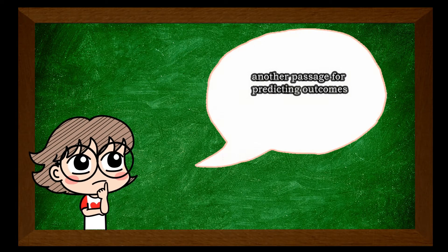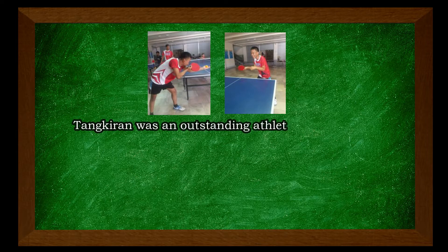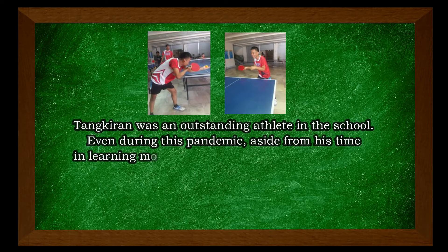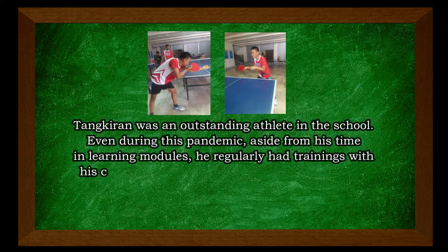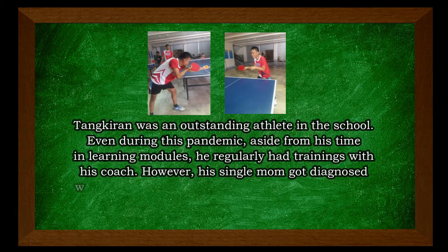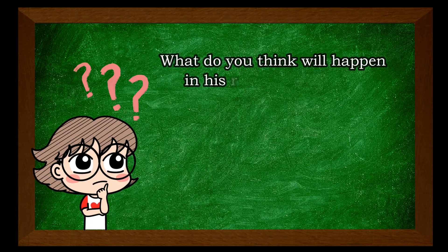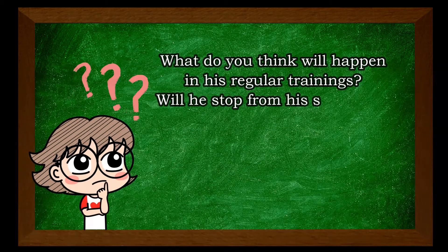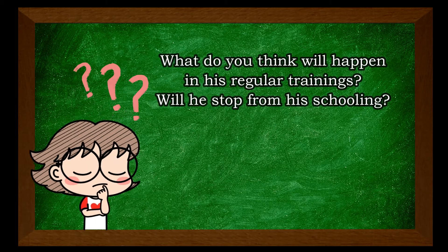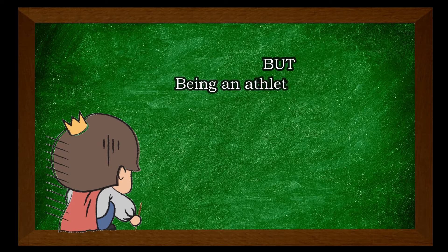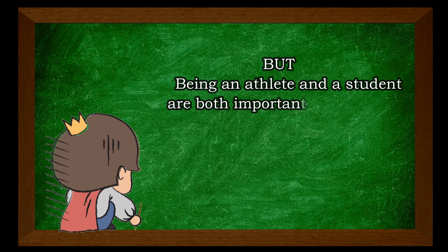Let us have another passage for predicting outcomes. Here it goes. Tangkiran was an outstanding athlete in his school. Even during this pandemic, aside from his time in learning modules, he regularly had trainings with his coach. However, his single mom got diagnosed with cancer and no one would take good care of her except him. What do you think will happen in his regular training? Will he stop from his schooling? To predict the outcome, take note that only Tangkiran is the one responsible to take good care of his sick mother.